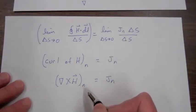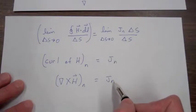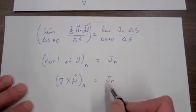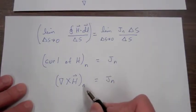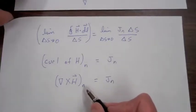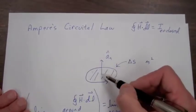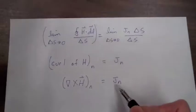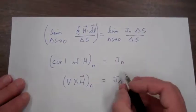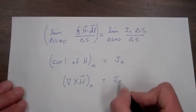Now this will just give us the component in the n direction. If we had oriented our loop such that the unit vector normal to it was in the a sub x direction, we would have found the component of the current density in the x direction.